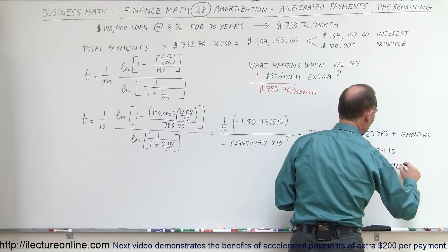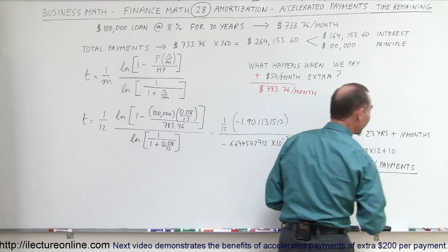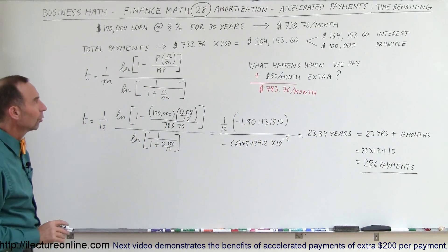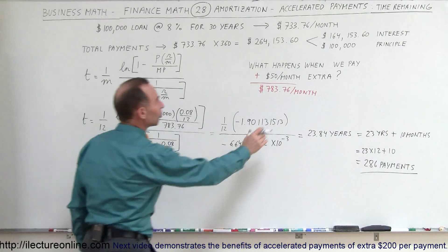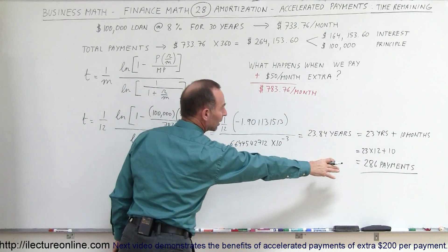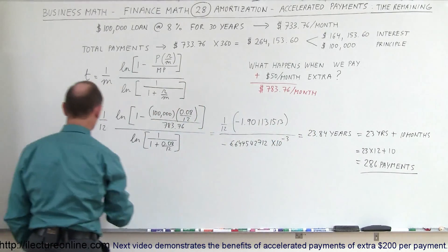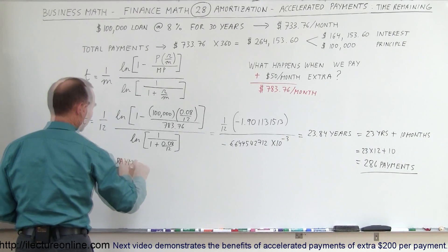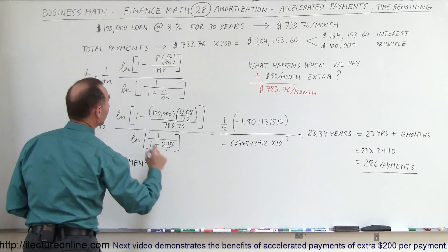So what that has done, it has reduced the number of payments from 360 to just 286. So if I now calculate the total amount of money spent for 286 payments at this new amount, so total payments at the new amount is equal to,